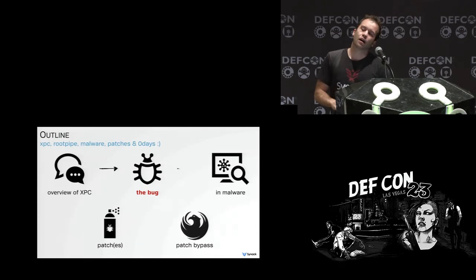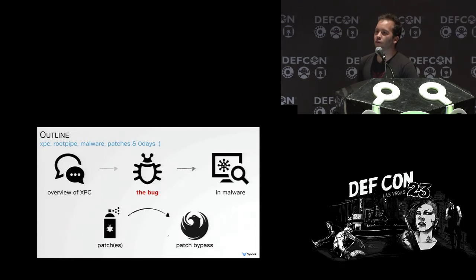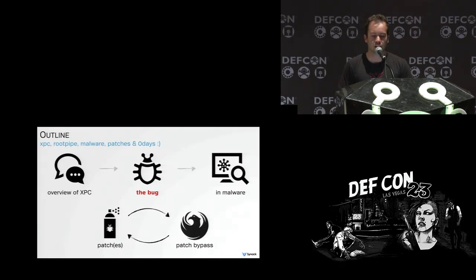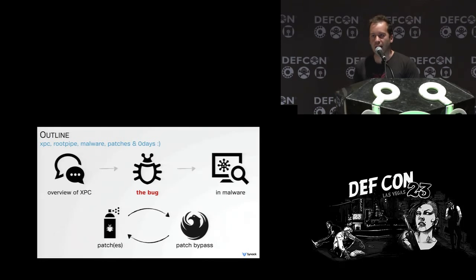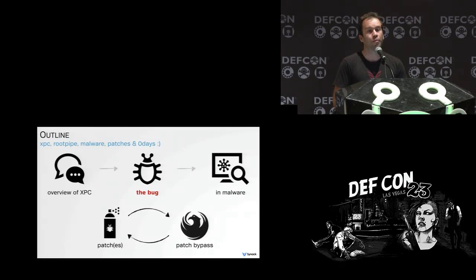So what is this talk going to cover? We're going to start with a brief overview of XPC. We're then going to talk about a privilege escalation bug that was named root pipe. We're going to talk about some malware that was discovered that actually preceded the public disclosure of the bug, so it was exploiting it as a zero day.